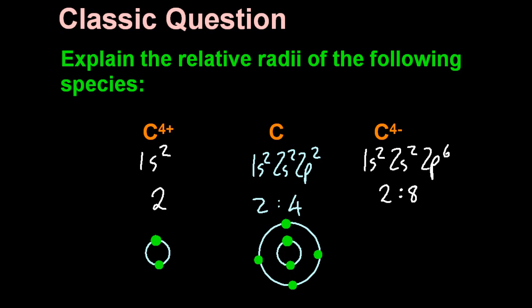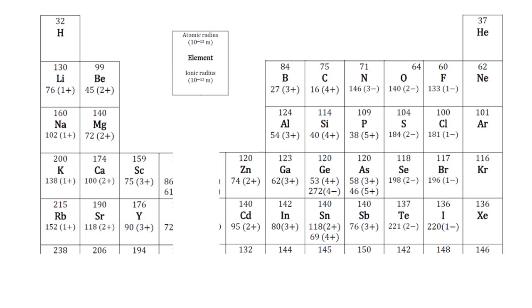And why is the carbide, ion means a negative ion, so the carbide ion, why is that bigger? Well, there's more electrons now, so there's more repulsion. So it puffs up, compared to the atom.